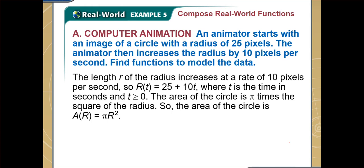We need to find the length of the radius. Since it increases 10 pixels per second, the first function r(t) will help us find the length of the radius at any given time t, where t is greater than or equal to zero. The initial length is 25 pixels, and it increases by 10 for every second, so we can write r(t) as a linear function. The second function finds the area of the circle: pi times the radius squared. Those are the two functions we need to model the data.